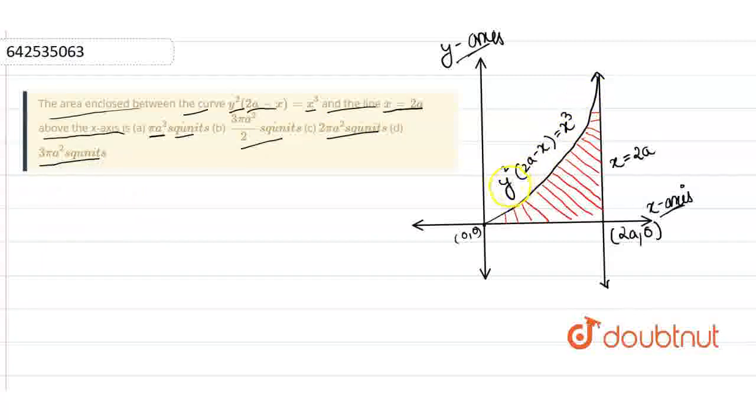This will be the y² = 2ax - x³ graph and this is x = 2a graph. So this whole shaded region will be the required area.